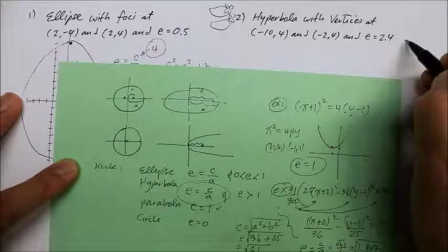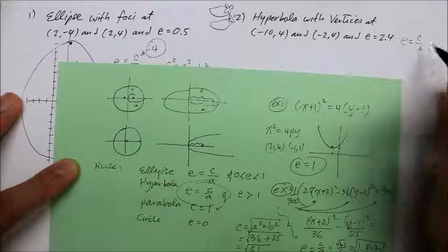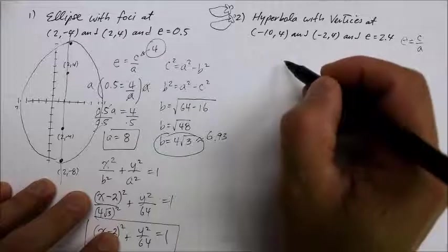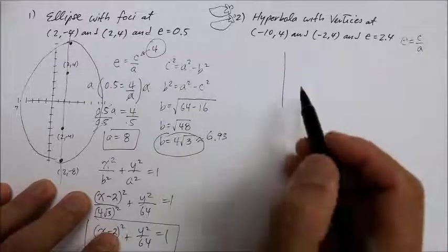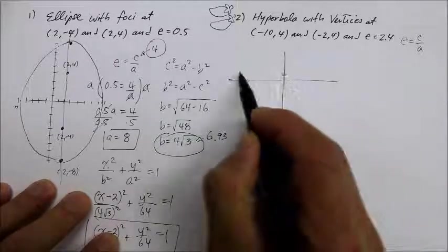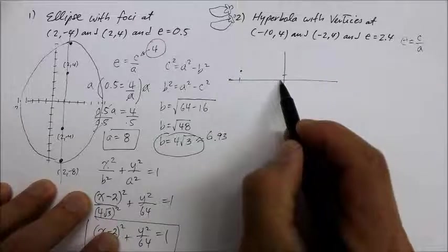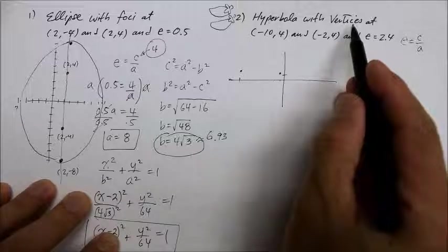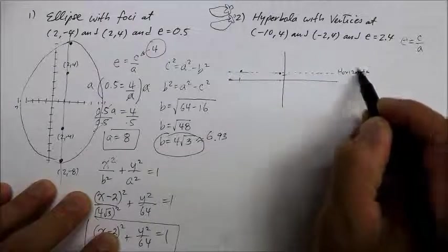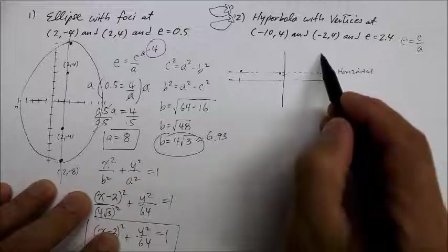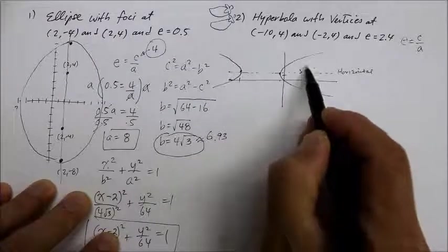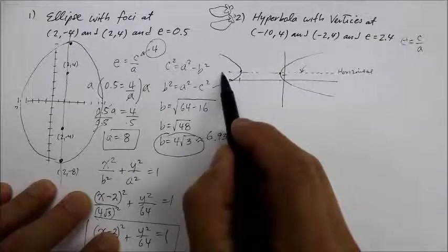So we want: eccentricity equals c over a, and from that we'll write the equation in standard form. Let me picture what this hyperbola is supposed to look like. The vertices are at (-10, 4) and (-2, 4). Those are the vertices, so obviously it's going to be a horizontal transverse axis — the hyperbolas open left and right — and somewhere inside will be my foci.